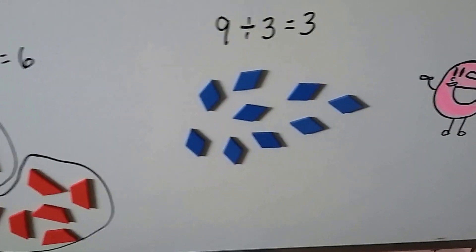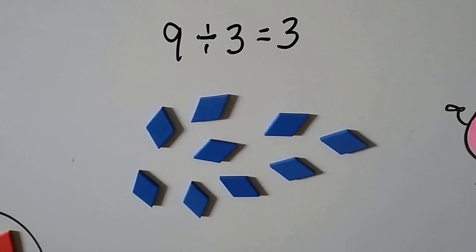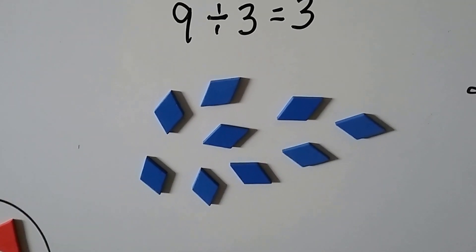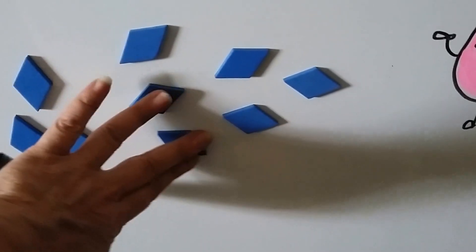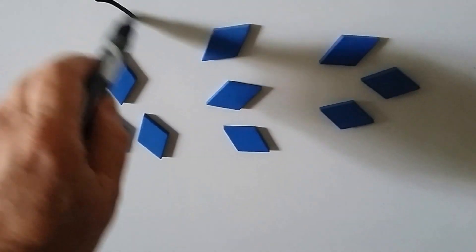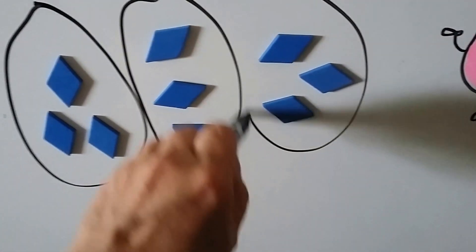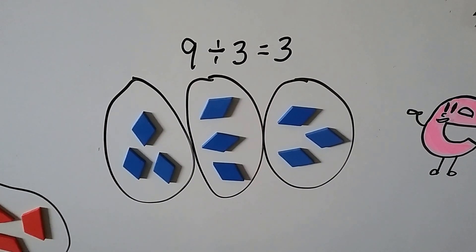Take a look at this one. Now we have nine blue diamonds. If we divide them into three groups, we should have three in each group. One group, two groups, three groups. Nine divided by three equals three.